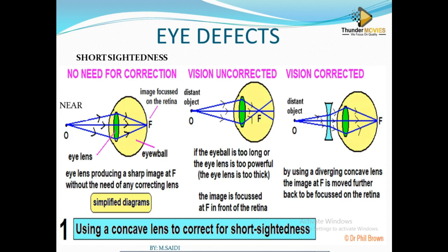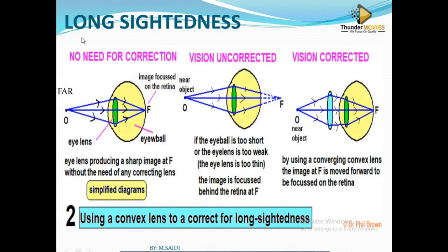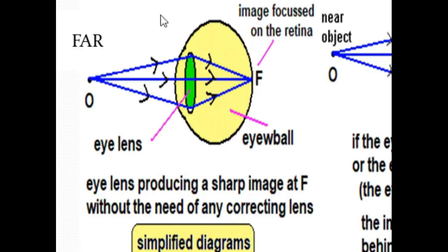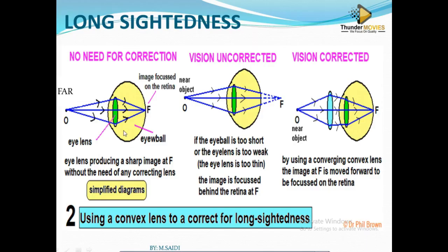Short-sightedness is sometimes called myopia. Now let's look at long-sightedness. Long-sightedness means you are able to see objects which are far, but you won't be able to see objects which are near. The eye can see far objects — the image is focused onto the retina — but near objects you won't be able to see.